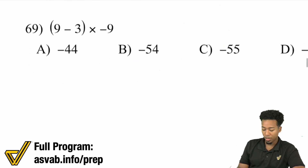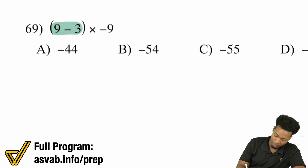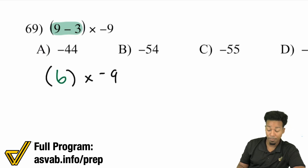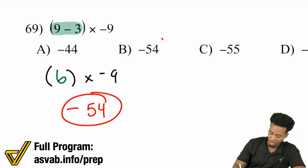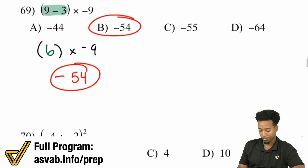Number 69: we have (9 minus 3) times negative 9. 9 minus 3 is going to be 6. And then we're going to be multiplying by that negative 9. A positive times a negative is a negative — 6 times 9 is 54 — so negative 54.